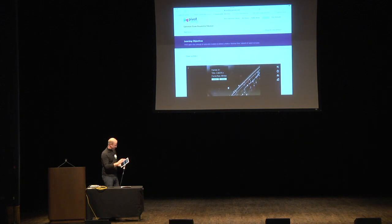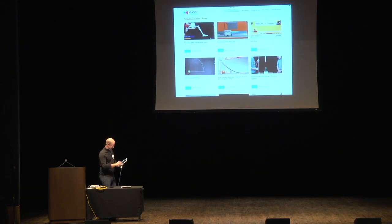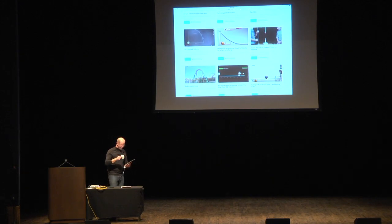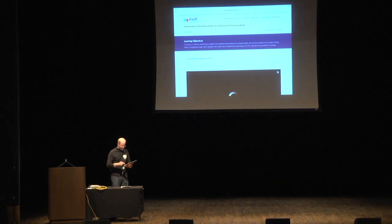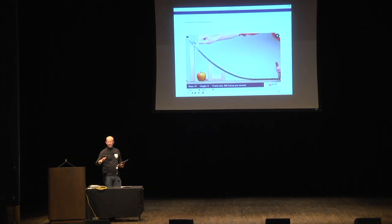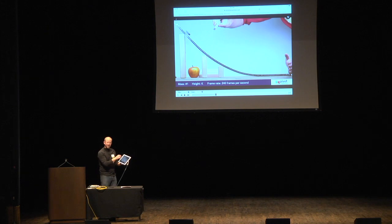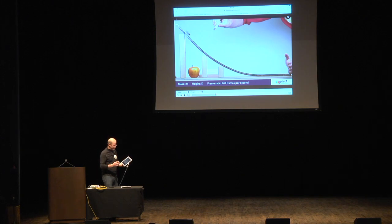Let me show you one that is an experiment. You know how when you were doing problems in school, they would say something like, a box slides down a frictionless plane? We have one — we made one, we constructed this. This is a superconducting puck, and it's levitated above a magnetic ramp. The puck is cooled in a little tray of liquid nitrogen, so it really is nearly frictionless.